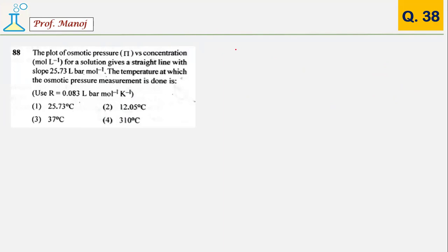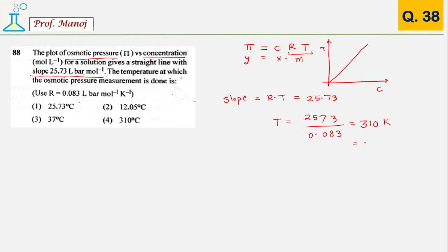A different type of question on solutions chapter. There is a relation between osmotic pressure versus concentration. Basic relation is pi equals CRT. They are saying they have plotted a graph of pi on Y axis, C on X axis. This multiplication is slope. I should get a line this way. They are saying slope is this much. Slope value, which is RT, is 25.73. Temperature will be therefore 25.73 upon 0.083. This comes out to be 310 Kelvin, which is 37 degree Celsius. The answer is 3.